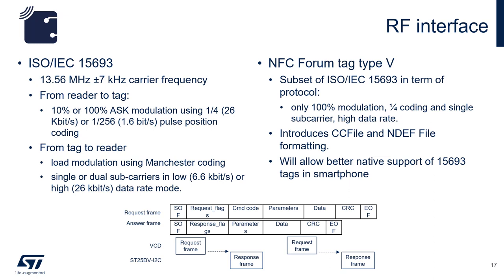Within the ISO 15693 specification, a 13.56 MHz carrier frequency is used. From reader to tag, 10% or 100% amplitude shift keying modulation is used, which results in a bit rate ranging from 26 kbits per second to 1.6 kbits per second. From the tag to the reader, the load modulation is based on Manchester coding — single subcarrier at 6.6 kbits per second, or dual subcarrier at 26 kbits per second.